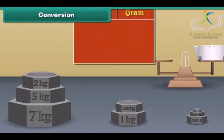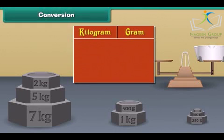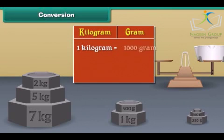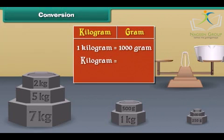The words kilogram and gram are used to express weight. One kilogram is equal to 1000 grams. Kilogram is also represented as kg. Gram is also represented as g.